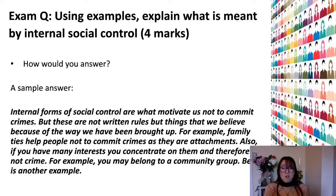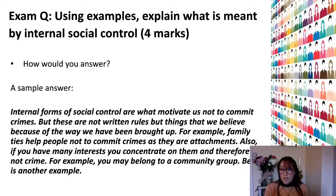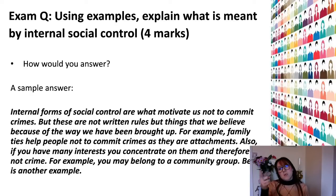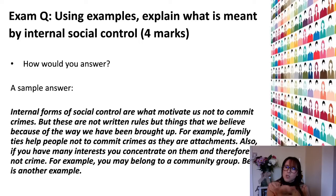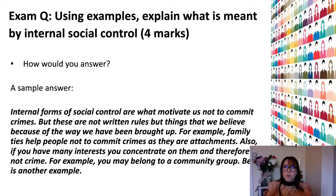The reason for that is: we haven't really got a definition, and the examples are really vague. 'Family ties help people not to commit crimes' — family ties like what? There are no key words — no rational ideology, no tradition, no culture, no specific examples like the Ten Commandments. There is a synoptic link with the word 'attachments,' which is what Bandura talks about, but it's not clear. If they had linked that specifically to Bandura, that would have been much better. So for this you would need more specific examples, more use of keywords, a clearer synoptic link and a better definition — that's why two to three out of four.